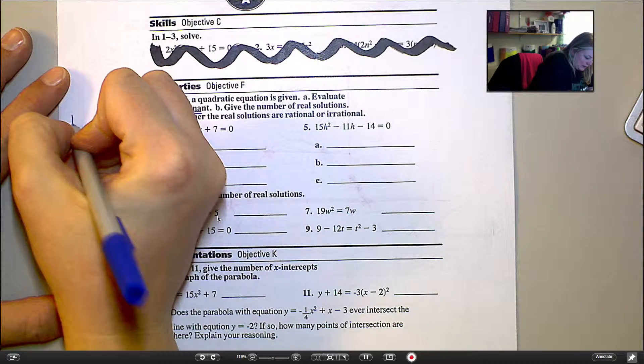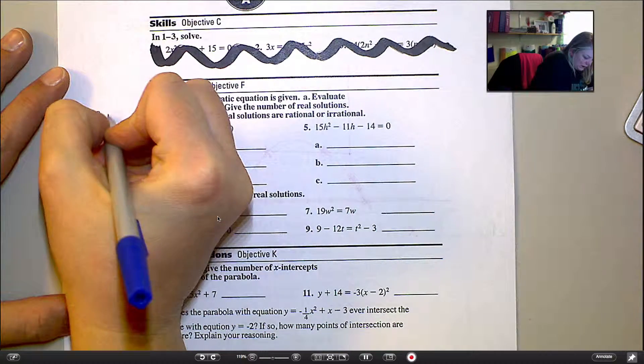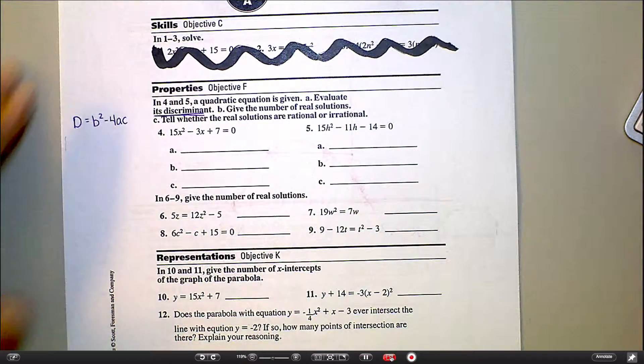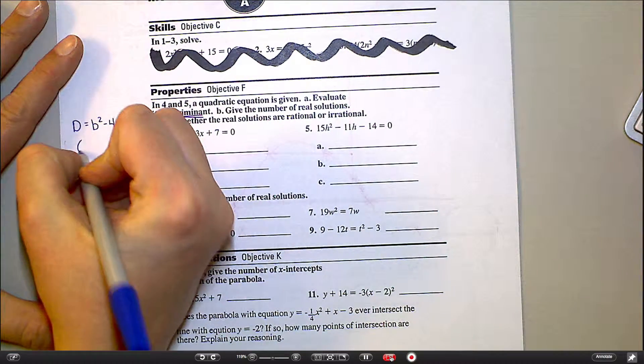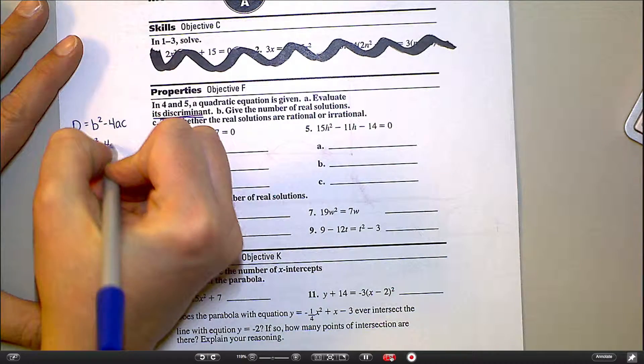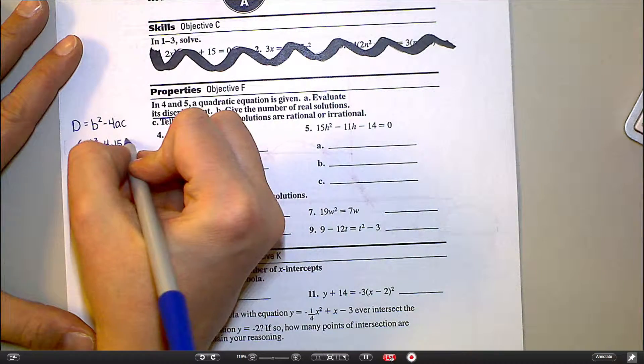Remember that the discriminant is calculated by doing b squared minus 4ac. Oh, I guess you can be done looking at my face now. So for something like number 4, I'm going to do negative 3 squared minus 4 times a, which is 15, times c, which is 7.